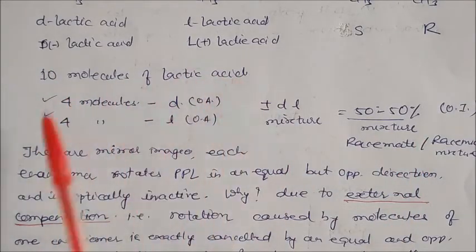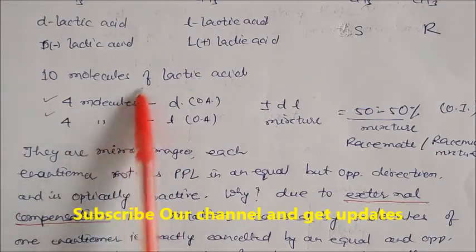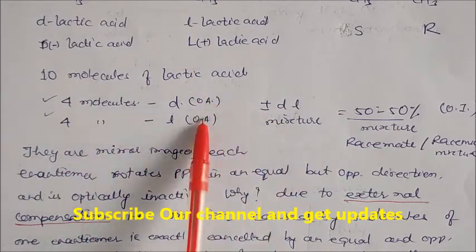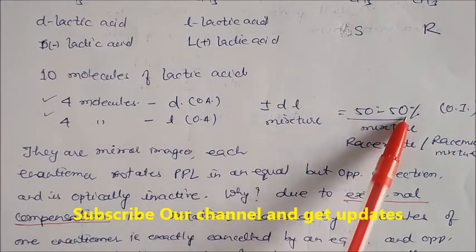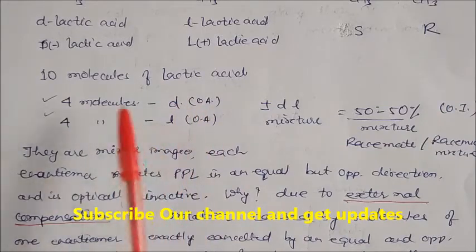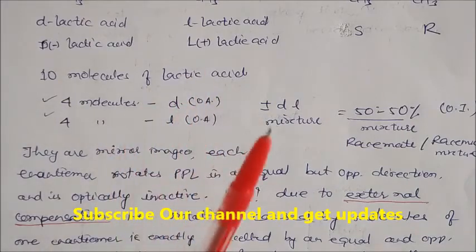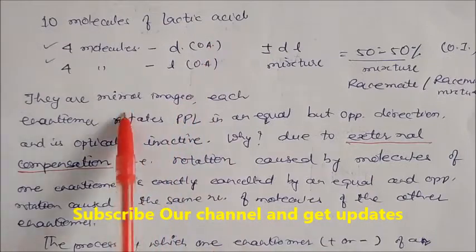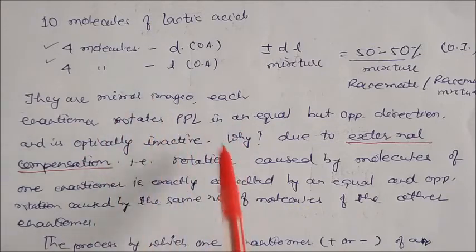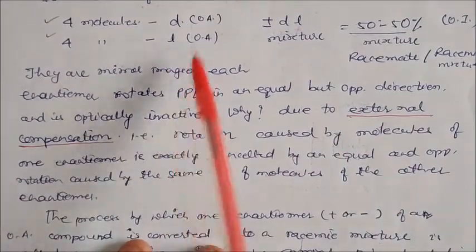Suppose you have 10 molecules of lactic acid, and out of those, 4 molecules are in D form and 4 molecules are in L form. These 4 molecules are equal in number, so we can say this equal number is nothing but the plus-minus DL mixture, or racemic mixture. In terms of percentage, we can say it is 50-50%, and this is optically inactive because these two rotations cancel each other. So this mixture is optically inactive, but individually the D is optically active and L is optically active.